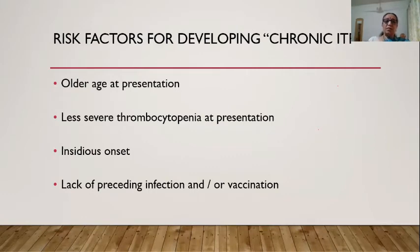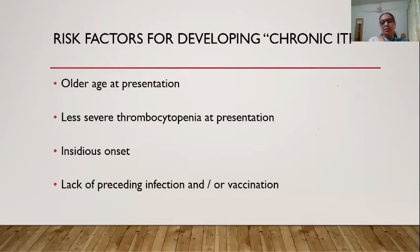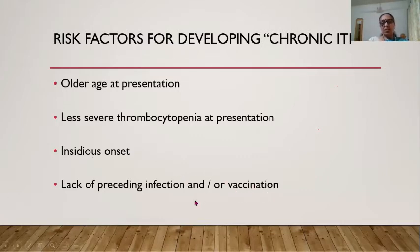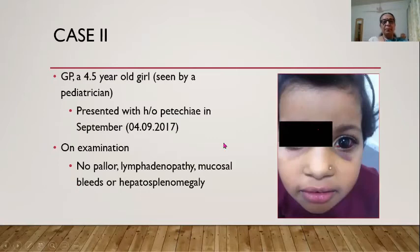Factors predicting chronicity include older age at presentation, less severe thrombocytopenia at presentation, insidious onset rather than acute crash, and lack of preceding infection or vaccination. These features suggest this is not acute ITP but chronic ITP.